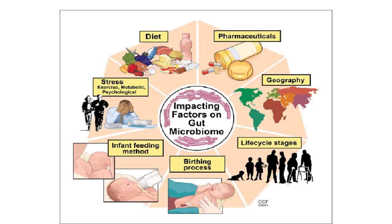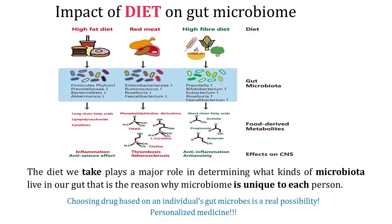We shall now look at the factors that affect gut microbiota composition and functions. The diet we take plays a major role in determining microbiota diversity of our gut — that is the reason why the microbiome is unique to each person. High fiber diet leads to rich microbial diversity and the gut microbiota helps in degradation of these fibers into short-chain fatty acids, which are the main source of energy to epithelial cells. Short-chain fatty acids are mainly composed of acetate, propionate and butyrate, which play a major role in anti-inflammation, neural plasticity and neural protection.